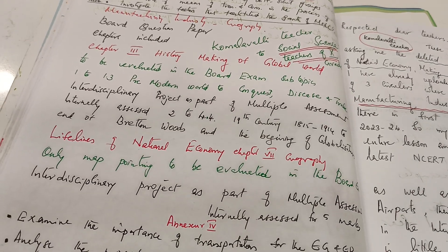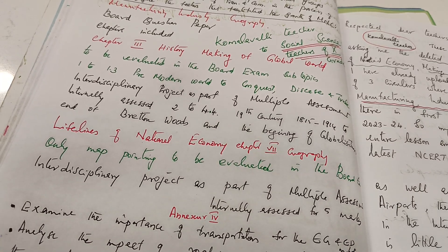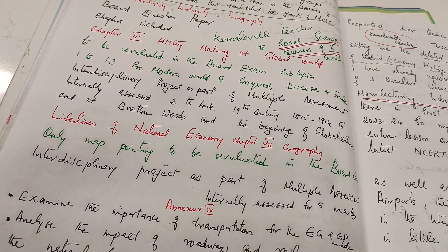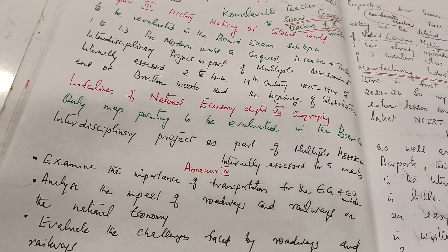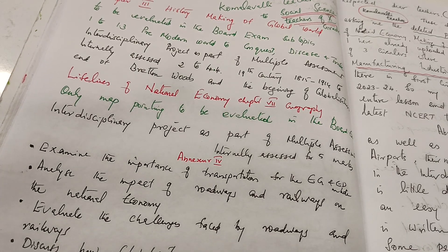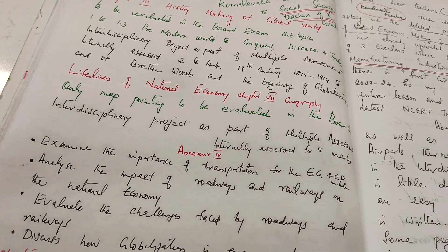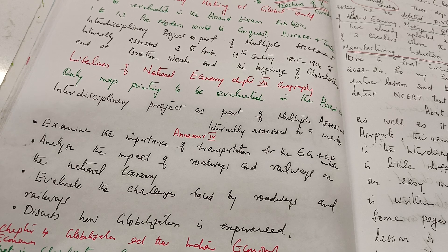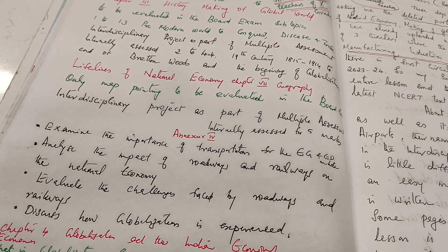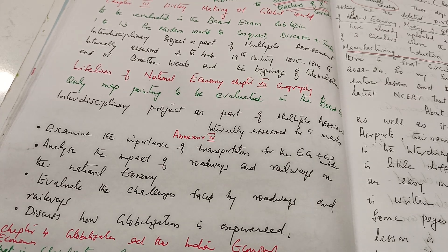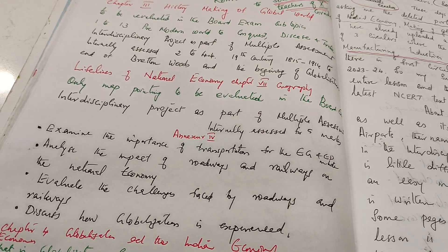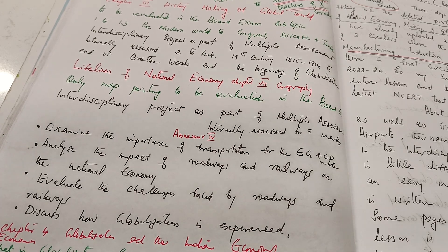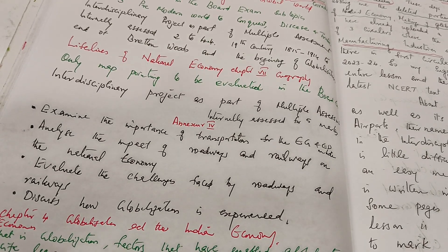Then comes Lifelines of National Economy, Chapter 7 of Geography. Only map-pointing is to be evaluated in the board exam. But in Annexure 4, for the interdisciplinary project as part of multiple assessment, internally assessed for five marks, it is written: examine the importance of transportation for economic growth and development; analyze the impact of roadways and railways on the national economy; evaluate the challenges faced by roadways and railways; and discuss how globalization is experienced. My suggestion is to guide the children to go through this and let them learn and present it, because this is a project — they should find out themselves, unlike assignments where the teacher directs.